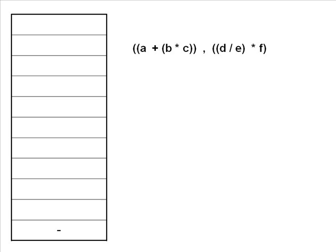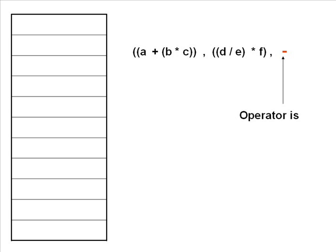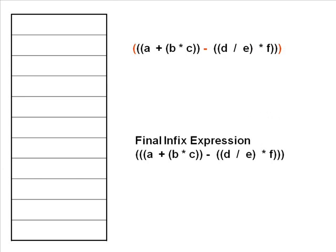Now we come to the last character in the stack, which is minus. We pop it and place it between the last two operands we have. So our final infix expression is (A+(B*C)) - ((D/E)*F) with proper braces.